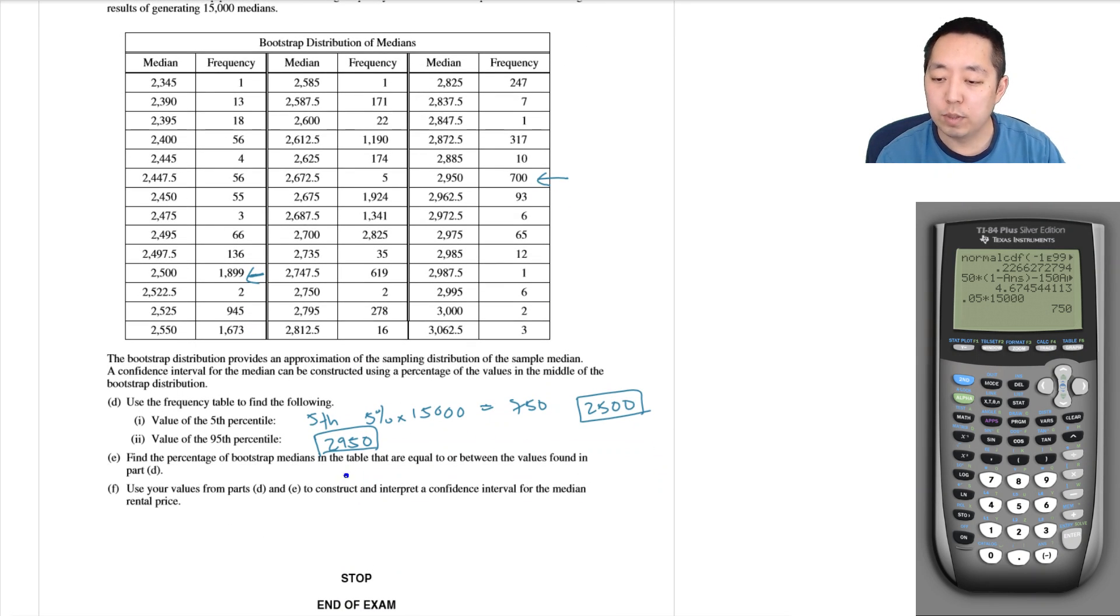Now find the percentage of the bootstrap medians in the table that are equal to or between the values found in part D. It's not actually equal to 90 percent because the 750th happened to be in there. We actually have to add up all the ones. Technically, the percentage would be all of these.